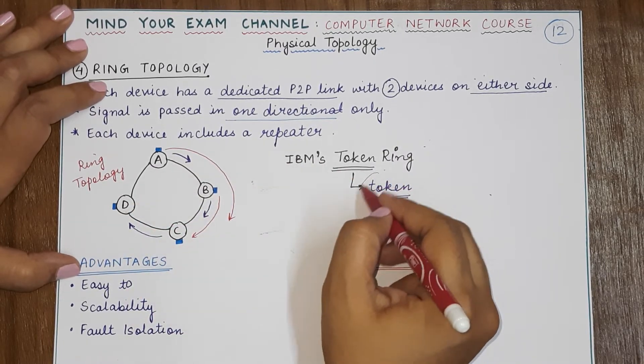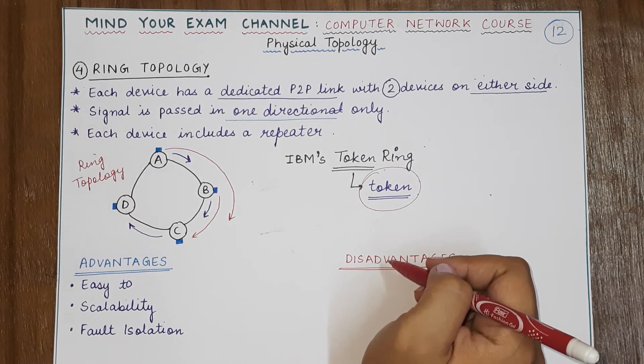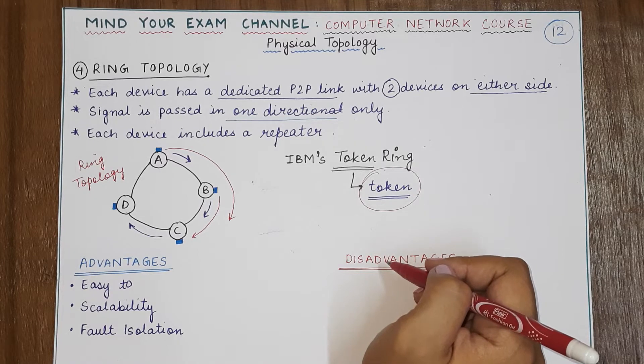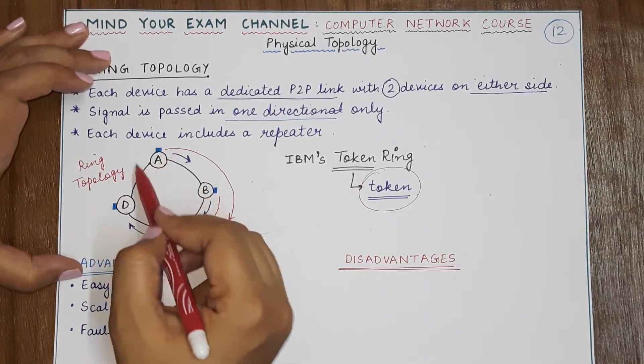So there must be a mechanism to decide who is going to transmit data next. This is decided with the help of tokens. So tokens basically tell you whose chance it is to transmit.